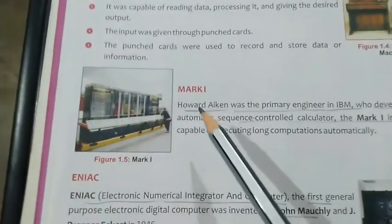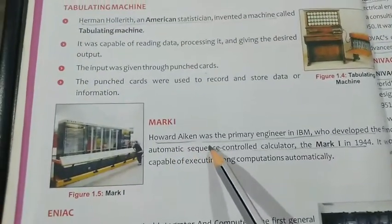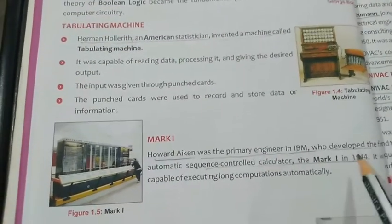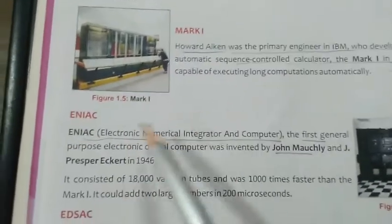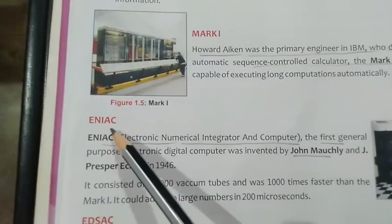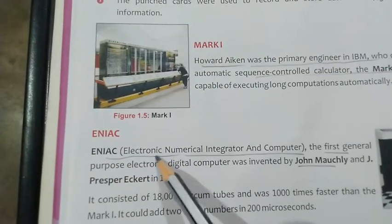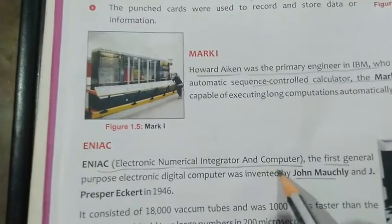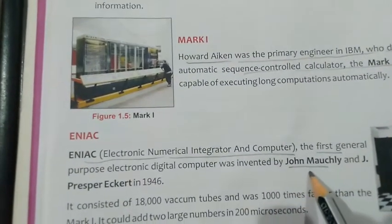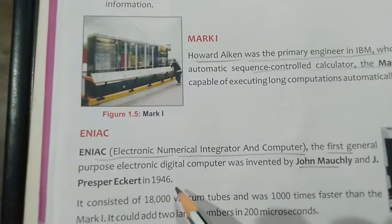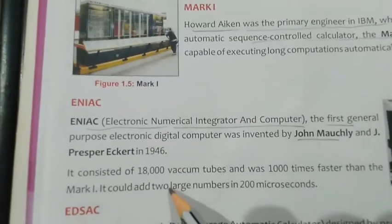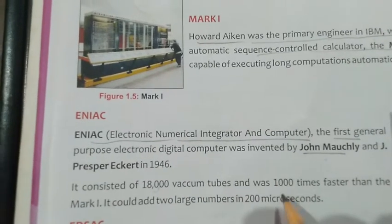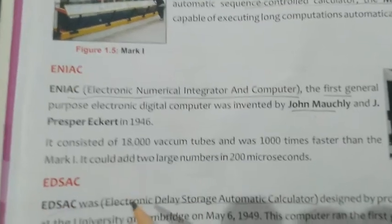Next is Mark 1, developed by Howard Aiken, an engineer working at IBM, in the year 1944. Next is ENIAC — Electronic Numerical Integrator and Calculator — developed by John Mauchly and John Presper Eckert in 1946. This machine consists of 18,000 vacuum tubes and works much faster than Mark 1.